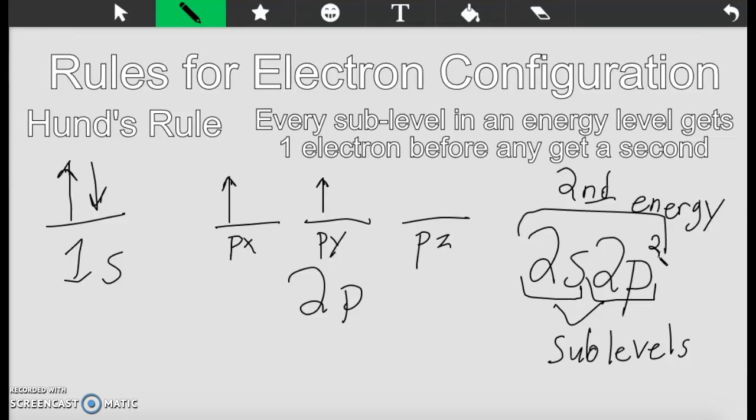And if this was really 2p3, the third electron would go over here. And then if we hit 2p4, then we go back and put our next electron here. 2p5. And then if we had a full 2p energy level, we'd put it right here. So this is Hund's rule.